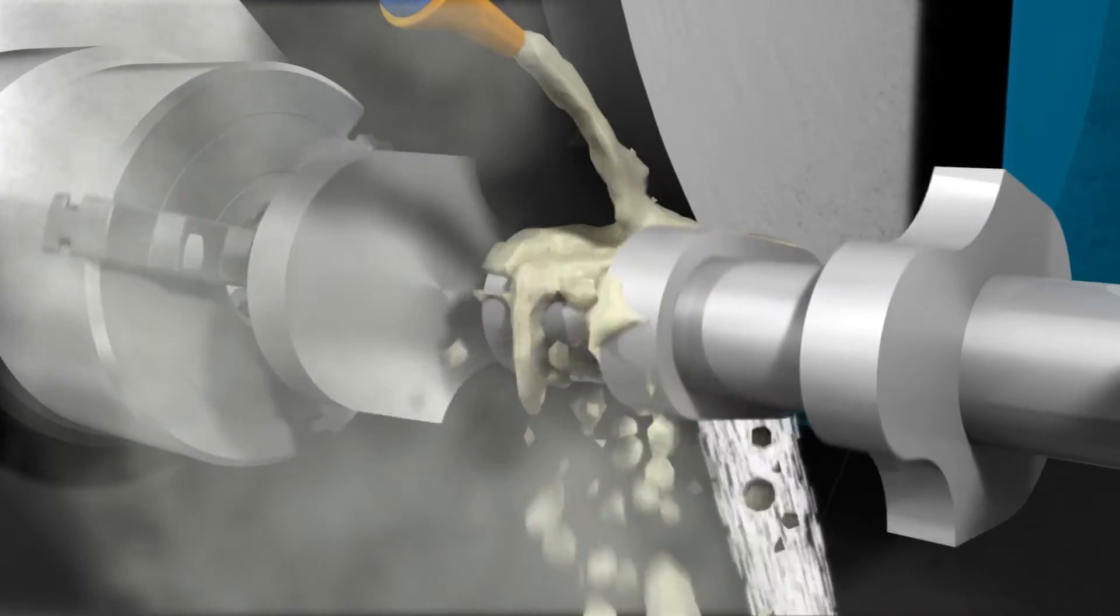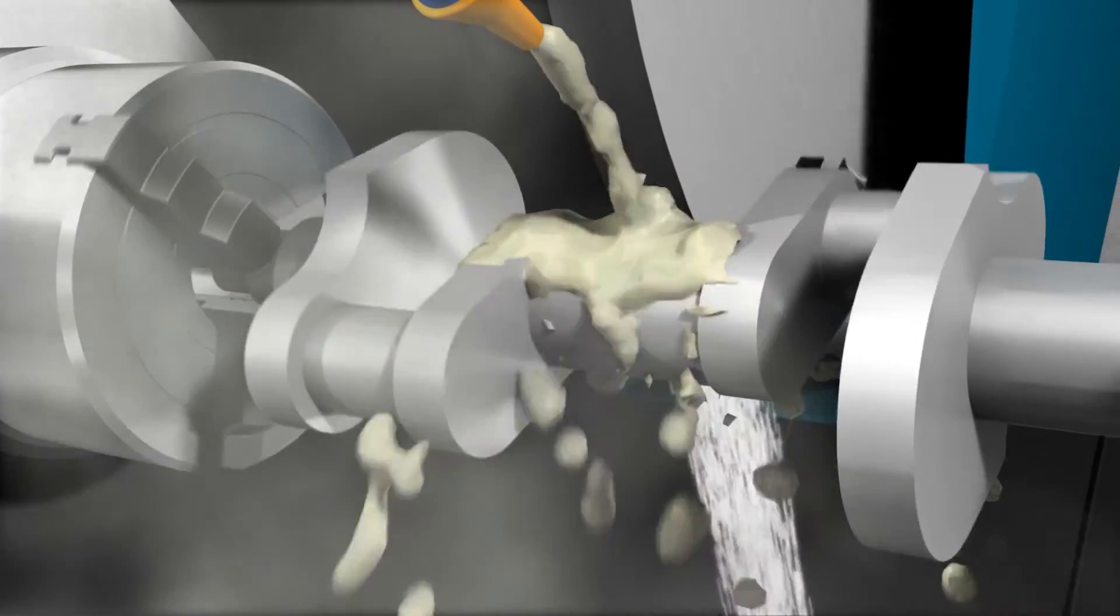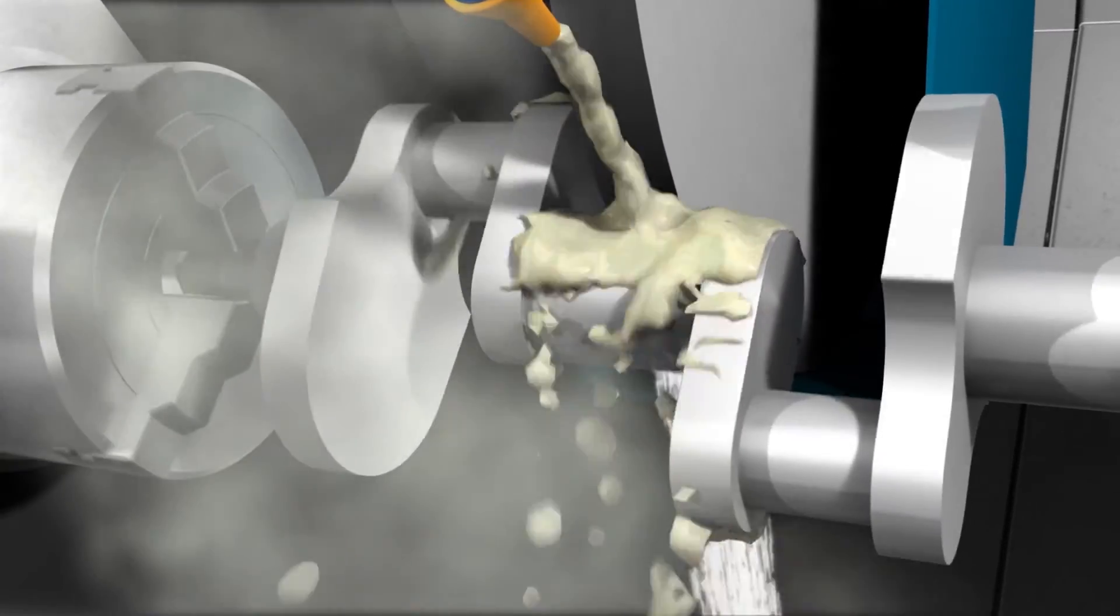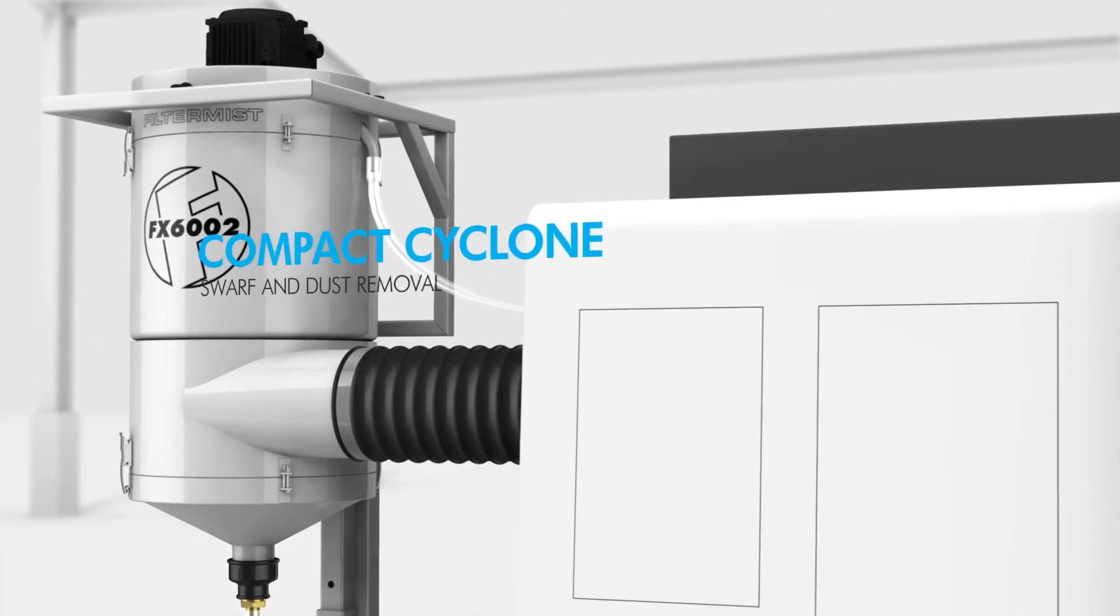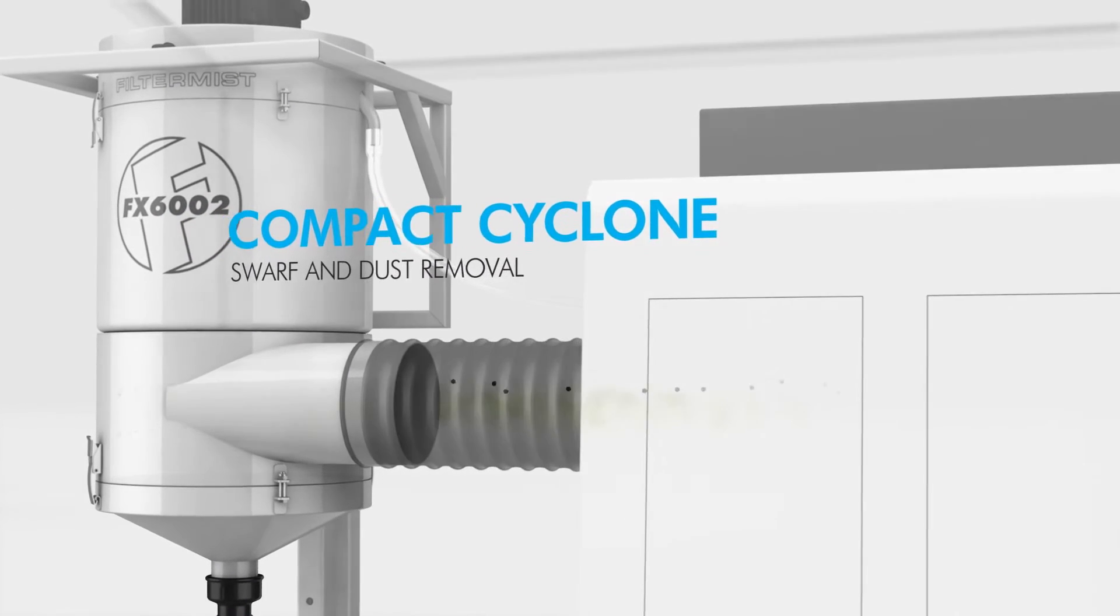For applications such as grinding, where the air is also contaminated with dust or metal fragments, the optional cyclone unit is designed to collect dust and swarf before it enters the Filter Mist unit.